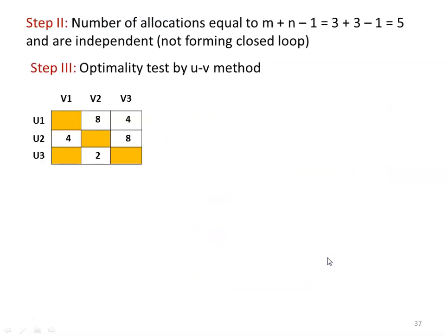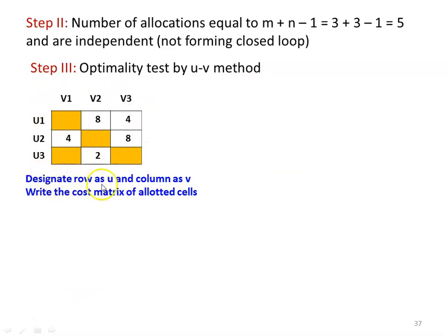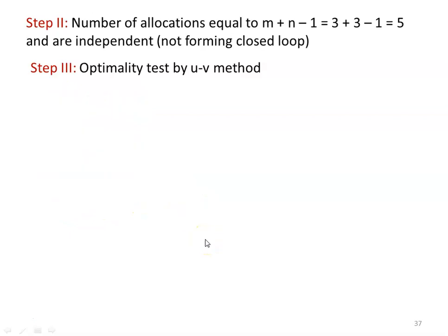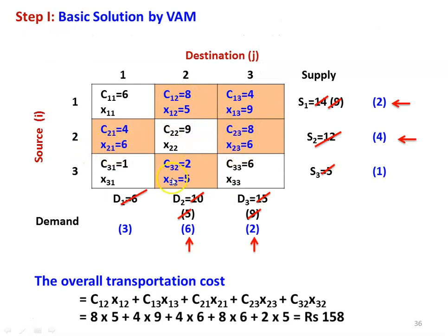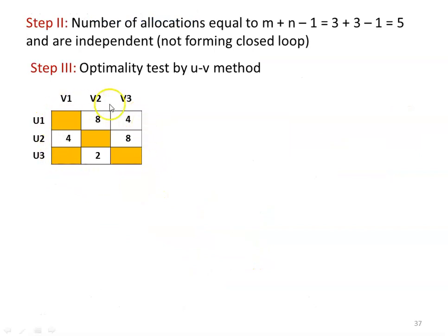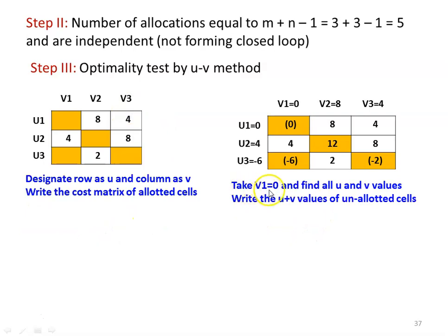Now we check for optimality using the UV method. We designate rows as U and columns as V: U1, U2, U3, V1, V2, V3. We write the cost matrix of the allotted cells — X12, X13, X21, X23, X32. We fix V1 = 0. Then U2 + V1 = 4, so U2 = 4. Since U2 + V3 = 8, V3 = 4. With V3 = 4 and C13 = 4, U1 + V3 = 4 gives U1 = 0. With U1 = 0 and C12 = 8, V2 = 8. Finally, U3 + V2 = 2, so U3 = −6.